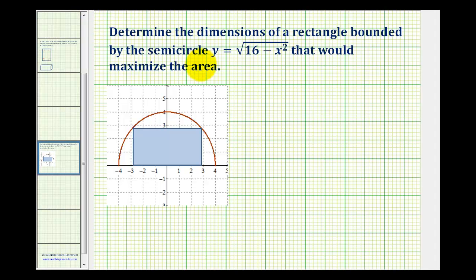We want to determine the dimensions of a rectangle bounded by the semicircle y equals the square root of 16 minus x squared that would maximize the area. Here's an example of what the rectangle might look like. Let's see if we can determine the dimensions of this rectangle.